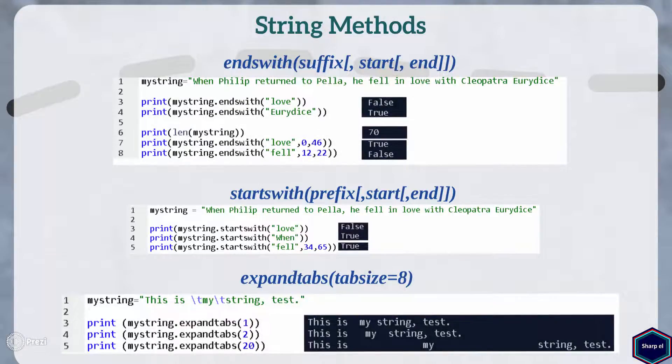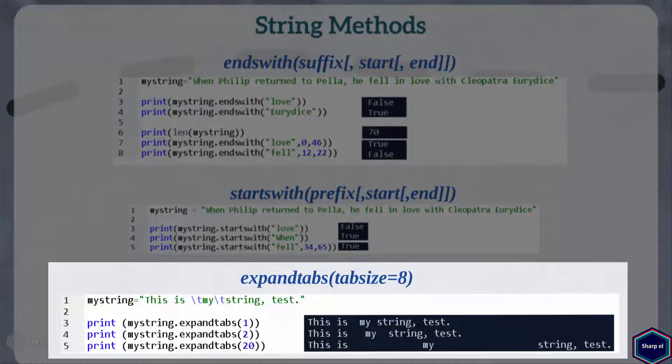Now let's look at very simple method, expandTabs. The expandTabs method replaces all tabs within a string with one or more spaces, depending on the current column and the given tab size. By default, tab size is set to 8.